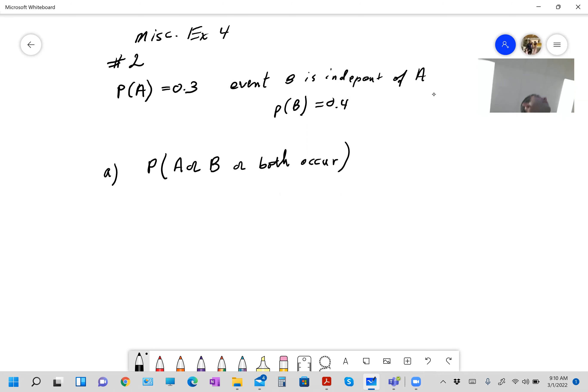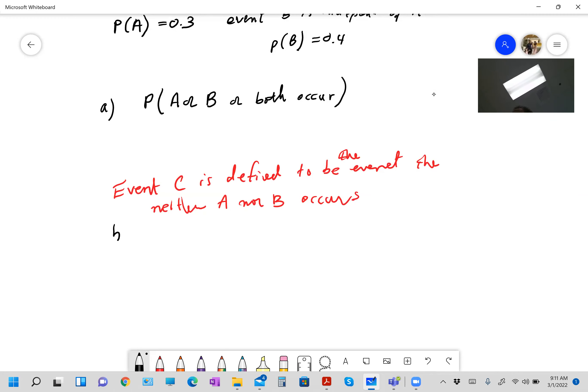All right, event C is defined to be the event that neither A nor B occurs, so I'll go ahead and write that down. Let me just give some space here. Event C is defined to be the event that neither A nor B occurs, so then for part B they say calculate the probability of C given A prime.